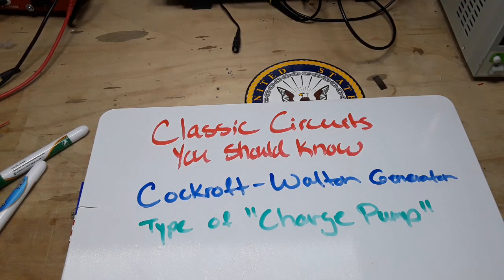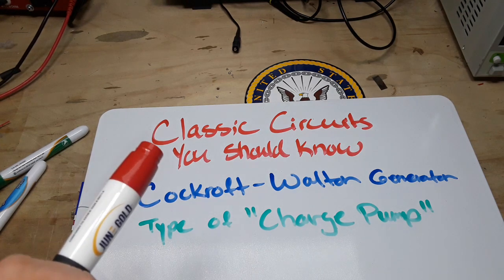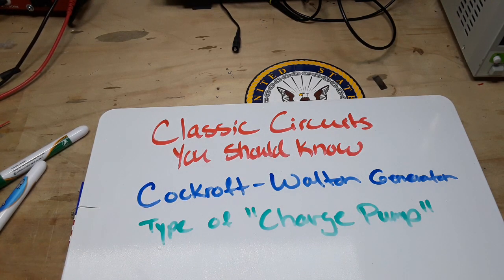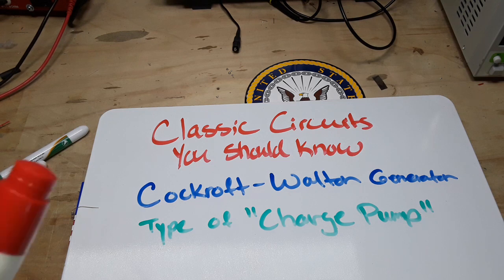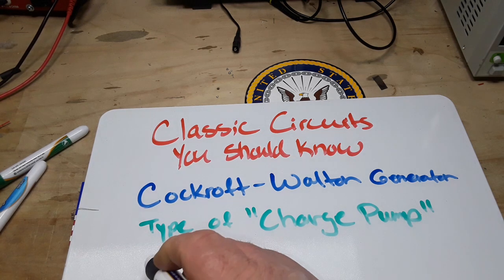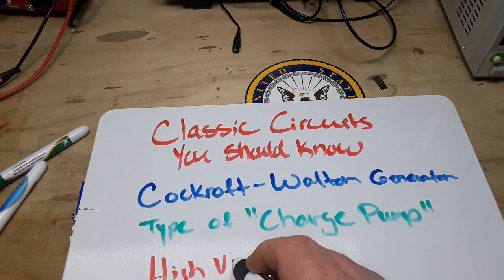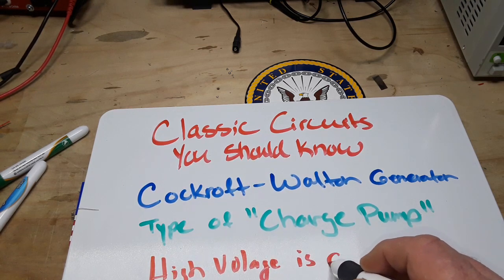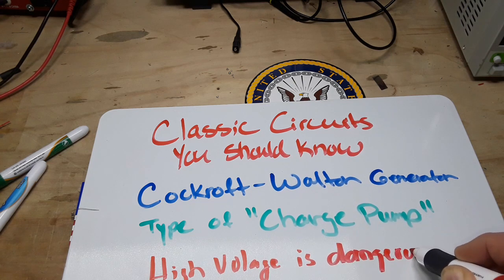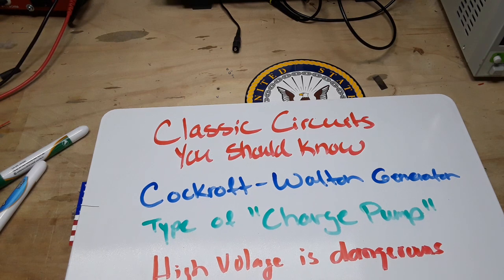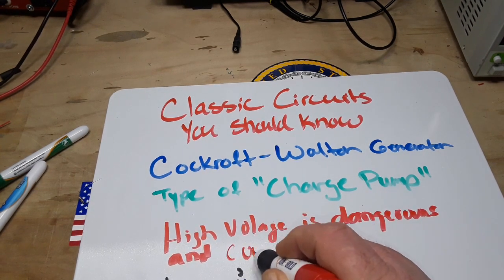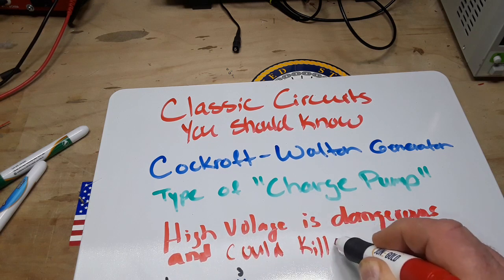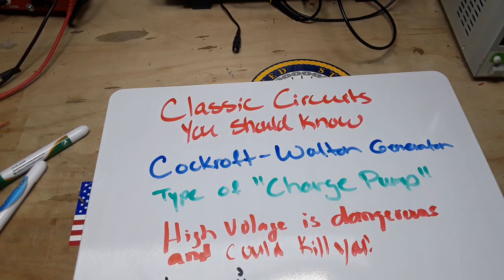Hey what's happening guys, today I got another classic circuits you should know for you. This is the Cockroft-Walton generator and it is a type of charge pump or voltage multiplier. It takes a lower voltage AC and converts it into a very high voltage DC. And remember, high voltage is dangerous and could kill you, so if you attempt to do this circuit you do so at your own risk.